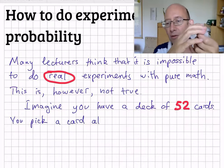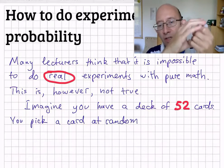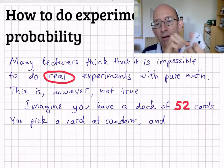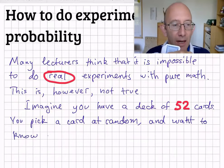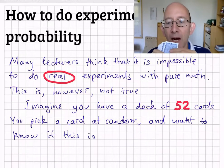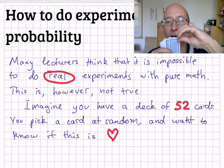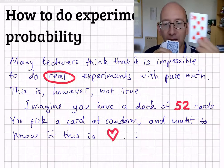But first you have to shuffle them. So we shuffle them. And now pick a card at random. And we want to know what is the probability that randomly chosen card is a heart. So pick the card at random and we got hearts.